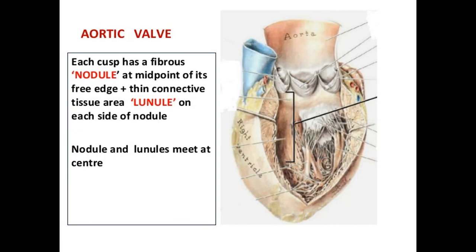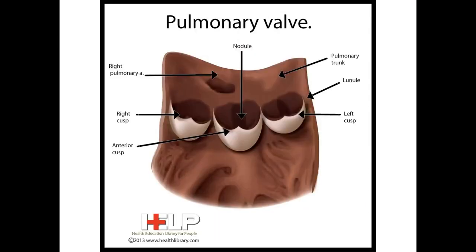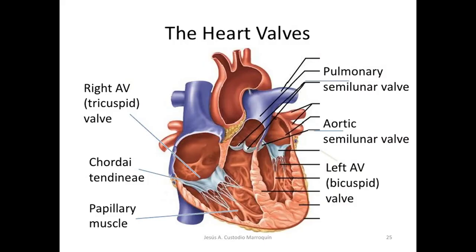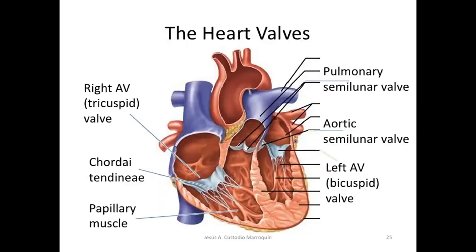In summary, the valves of the heart include two pairs: the atrioventricular pair and the semilunar pair. We have seen the tricuspid valve, the mitral valve, the pulmonary valve, and the aortic valve, along with the basic chordae tendineae and papillary muscles. The valve margins are attached to the fibrous skeleton of the heart.